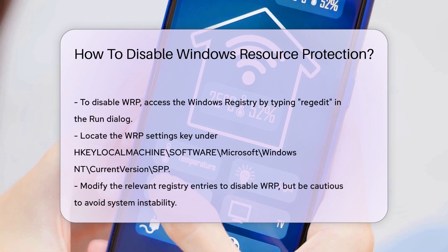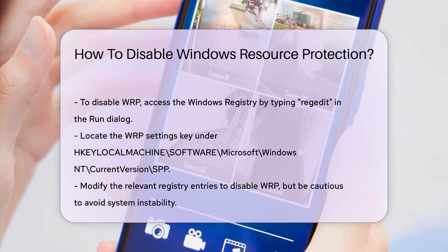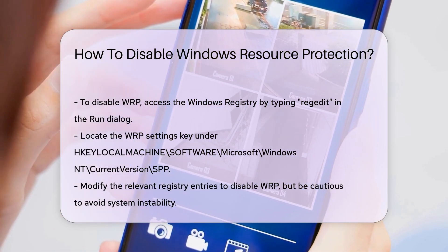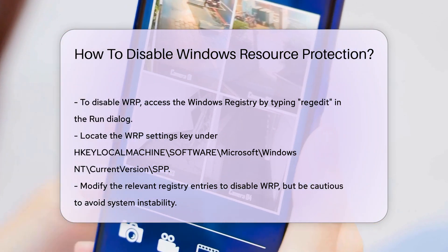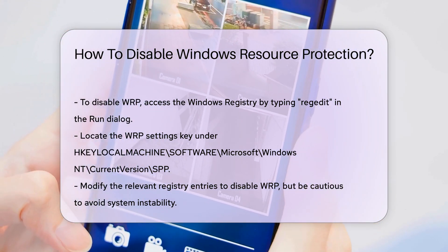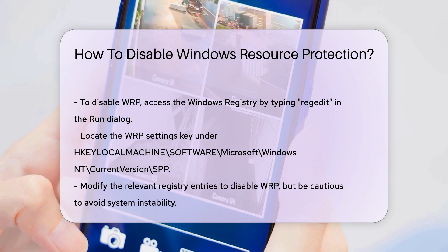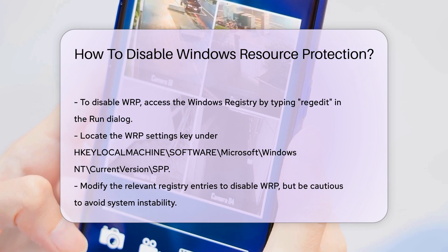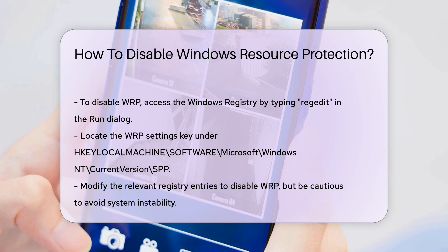If you still choose to disable WRP, you will need to access the Windows Registry. Navigate to the Registry Editor by typing regedit in the Run dialog. Locate the key responsible for WRP settings. This key is found under HKEY_LOCAL_MACHINE, Software, Microsoft, Windows NT, CurrentVersion, SPP.